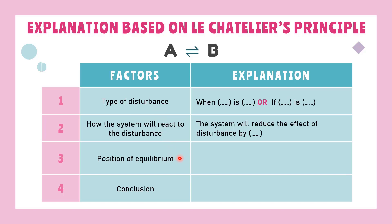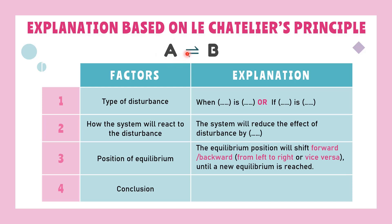Positions of equilibrium will be affected once the disturbance is applied. To restore the equilibrium, the equilibrium is said to have shifted to the opposite side from where the disturbance is applied. If the disturbance involves reactants on the left-hand side, the equilibrium positions will shift from left to right. Finally, we can conclude that concentrations of reactant will decrease whereas concentrations of product will increase.